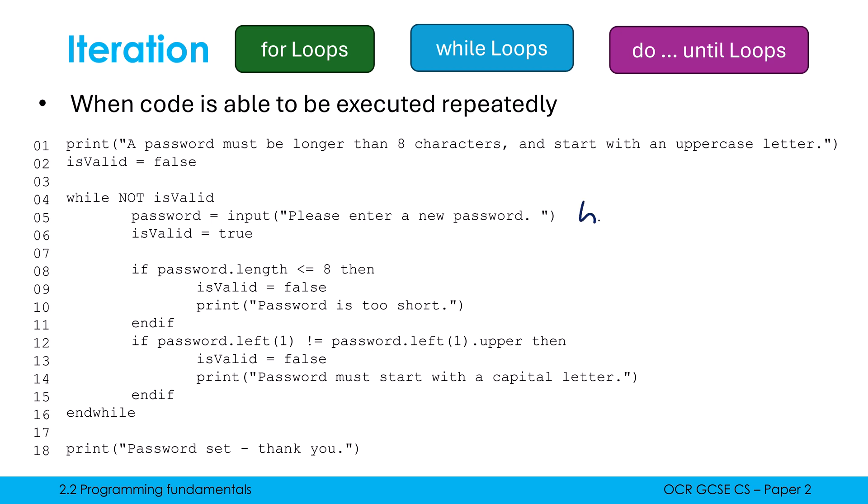Well, isValid is set to true. We're then checking to see if the password's length is less than or equal to eight. Well, 'hi' is less than or equal to eight, so this is going to run. We set isValid to be false, and we print out the password is too short. We get that output to the user. We then check this next if statement.